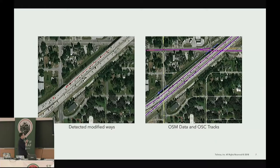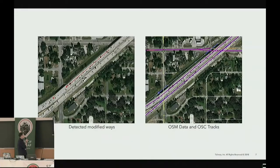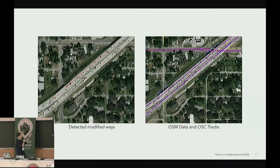We also detect modified ways — for example, if the road geometry has been modified. Here we can see a motorway link that has been modified; the nodes have been moved up to the north. On the left is the script output and on the right is the data. As you can observe, the other roads besides the modified one are aligned with the satellite imagery, and you can also see the GPS tracks there, which provide accurate positioning of the road.